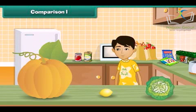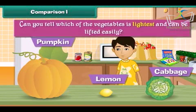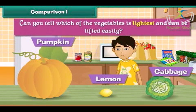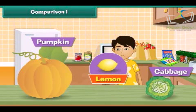Sandy has a pumpkin, a cabbage, and a lemon. Can you tell which of the vegetables is lightest and can be lifted easily? Yes, lemon is lighter than the other two vegetables. He can easily lift a lemon.